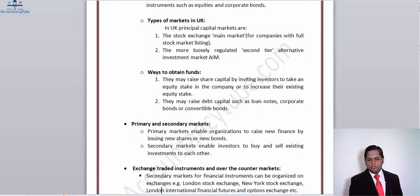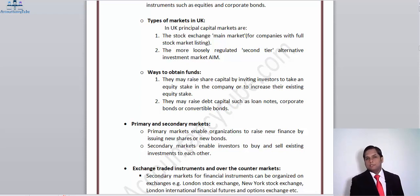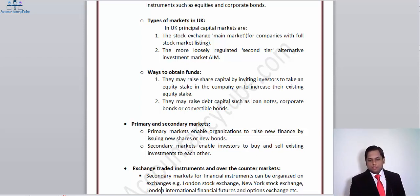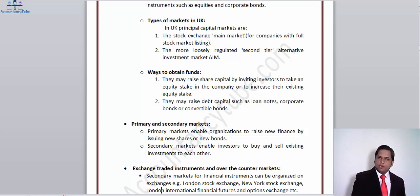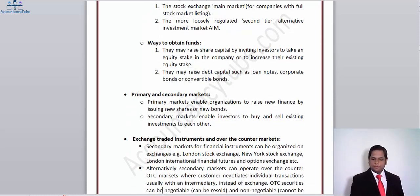In the UK, the principal markets are the stock exchange — the main market for companies with a full stock market listing, where listed entities' shares are bought and sold all the time — and the more loosely regulated second-tier Alternative Investment Market, or AIM.